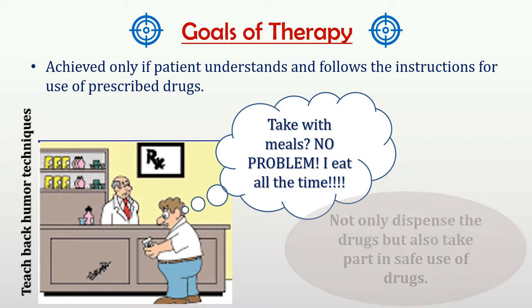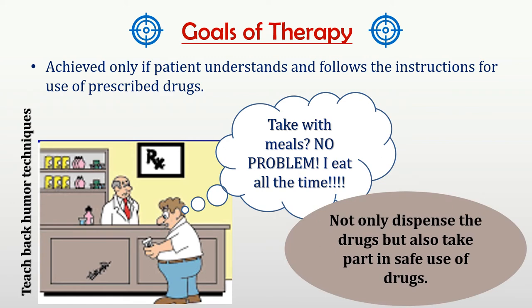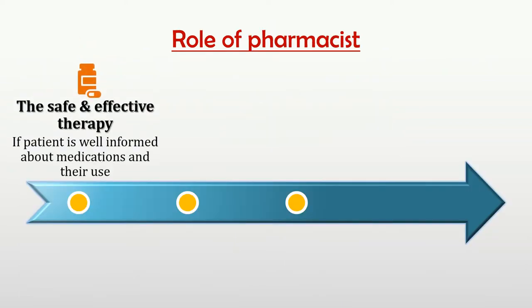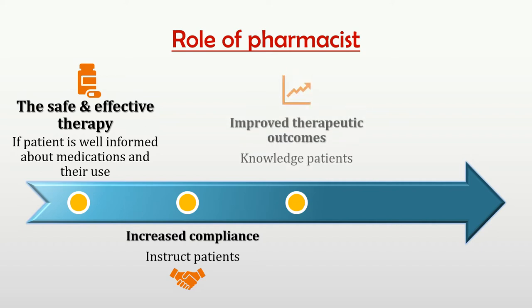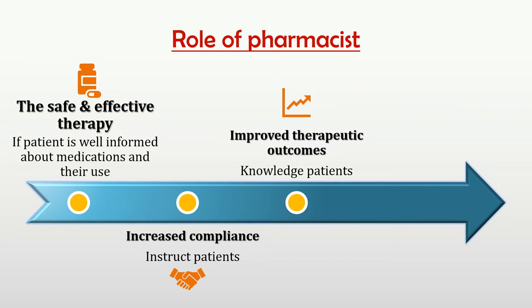Hence, today pharmacist not only dispenses the drugs but also takes an active part in using a drug safely, at both levels — in hospital as well as at the patient side. If the pharmacist informs the patients about the medications they receive and their uses, one can assure safe and effective therapy. If a patient is instructed about all the medications — how they are taken, when they are taken, what are the side effects — then there are chances to increase patient compliance toward the therapy, and there may be an increase in the therapeutic outcomes. All these factors are nothing but patient counselling.